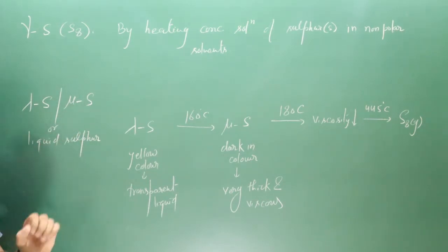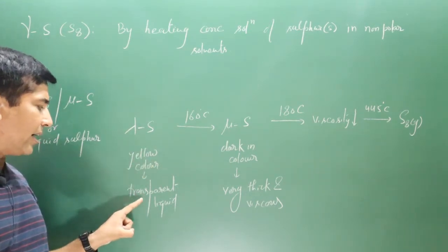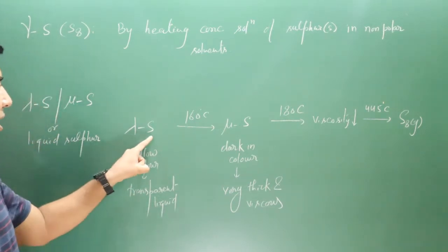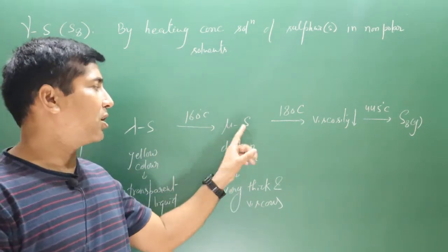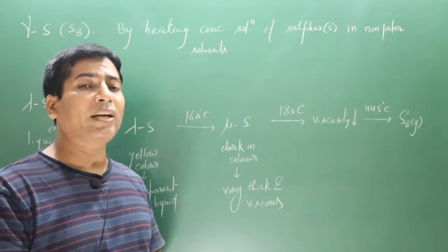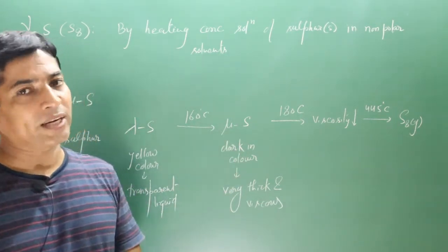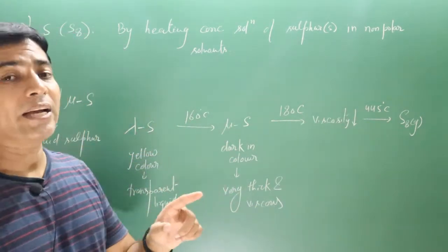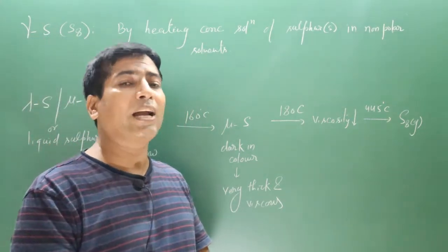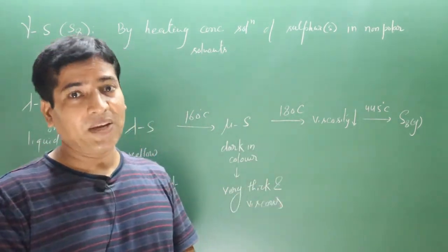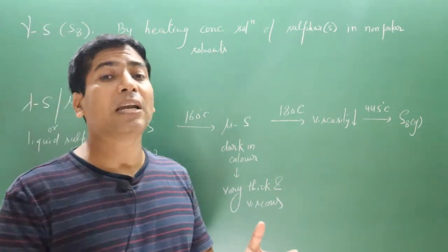Lambda sulfur and mu sulfur are also known as liquid sulfur because both are present in liquid form. Lambda sulfur is a yellow color transparent liquid. When lambda sulfur is heated at 160 degrees Celsius, it converts into mu sulfur. Mu sulfur also has a yellow color but is a dark yellow, and it is very thick and viscous by nature — the viscosity of mu sulfur is quite high. When mu sulfur is heated at 180 degrees Celsius, kinetic energy of the particles increases, bond breaking takes place, and the viscosity decreases, making it less viscous.